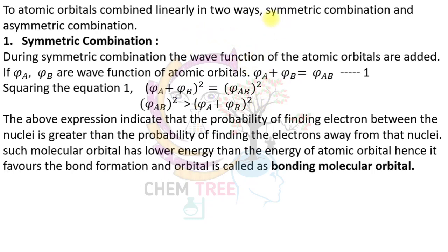There are two combinations: symmetric and asymmetric. During symmetric combination, the wave functions of atomic orbitals are added — they have the same sign. We get ψ_A + ψ_B = ψ_AB. When squared, this expression shows that the probability of finding the electron between the nuclei is greater than the probability of finding it away from the nuclei. The formed molecular orbital is termed the bonding molecular orbital, having lower energy than the atomic orbitals, and bond formation takes place.